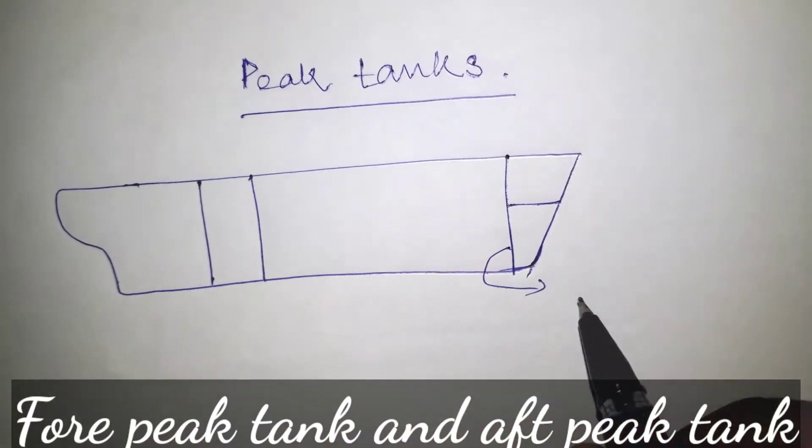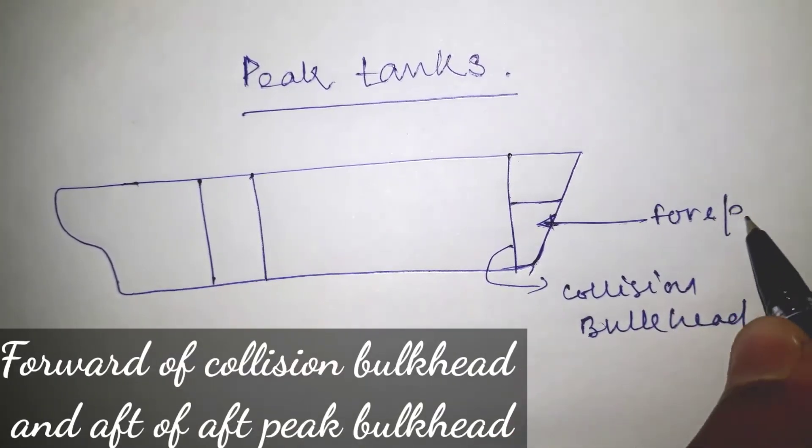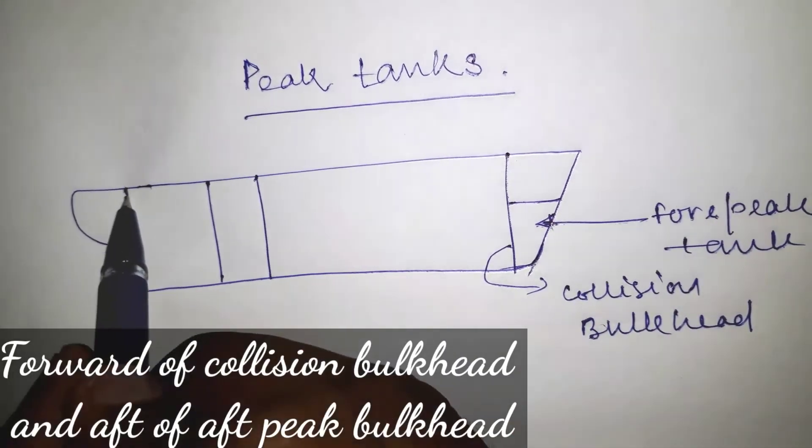The peak tanks are found at the forward and aft extremities of the ship, that is forward of the collision bulkhead and aft of the aft peak bulkhead.